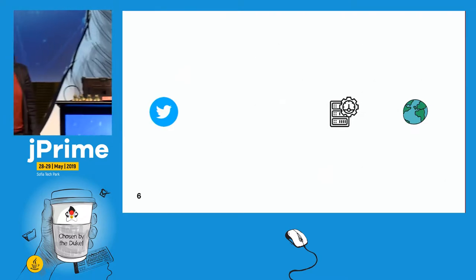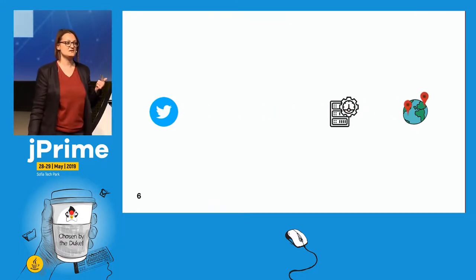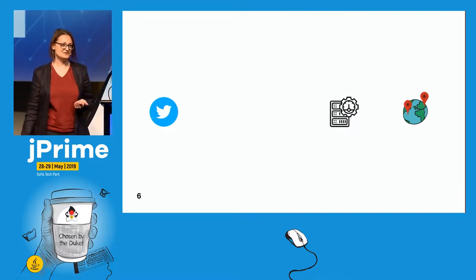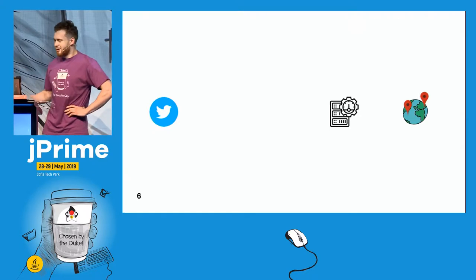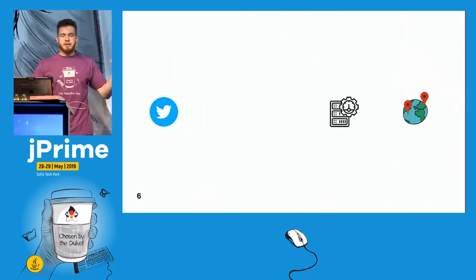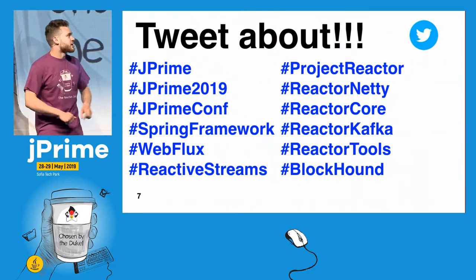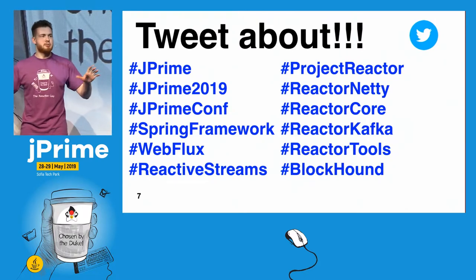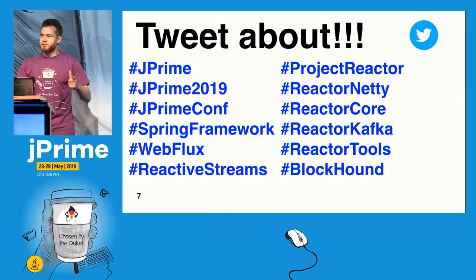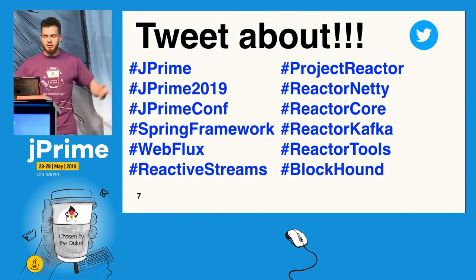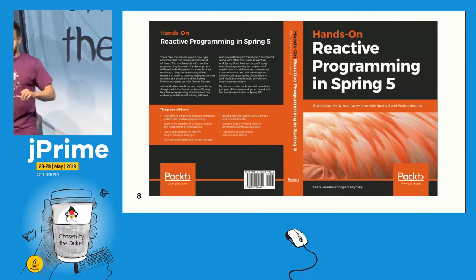For today's demo, we will use Twitter as a source of data, then consume specific tweets with specific keywords, and then send this information to the browser as server-sent events. It's almost a hello-world Twitter application. Please remember the hashtags — J Prime, J Prime 2019, J Prime Conf. Please use these tweets and tweet about our talk, share your ideas and feedback. The most active tweeter will get a book on reactive programming in Spring.